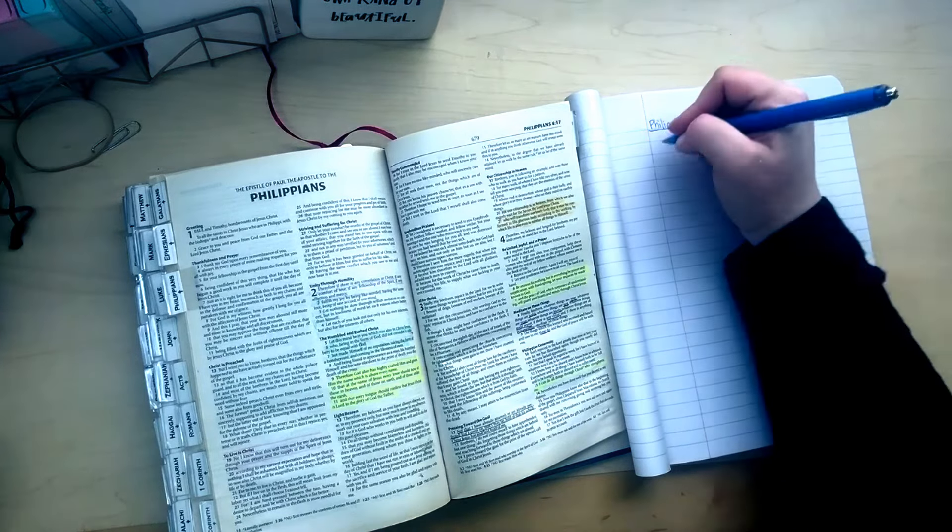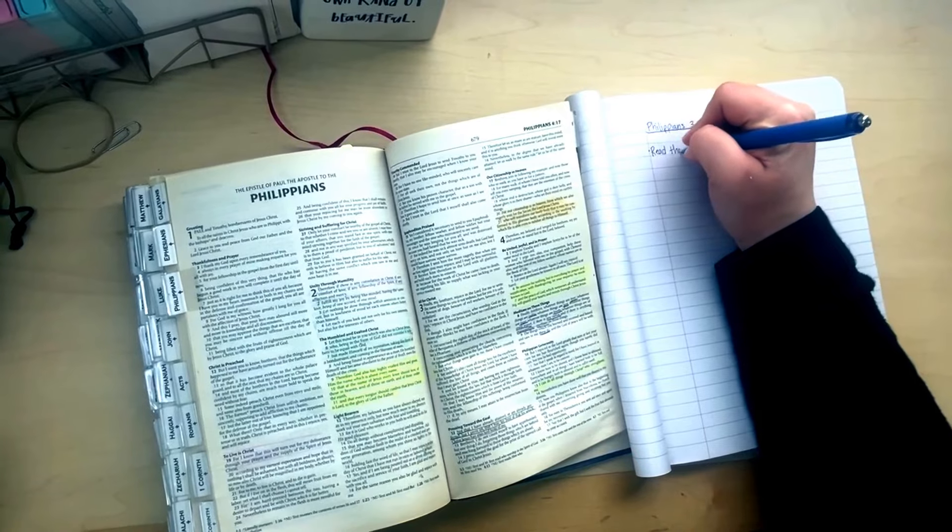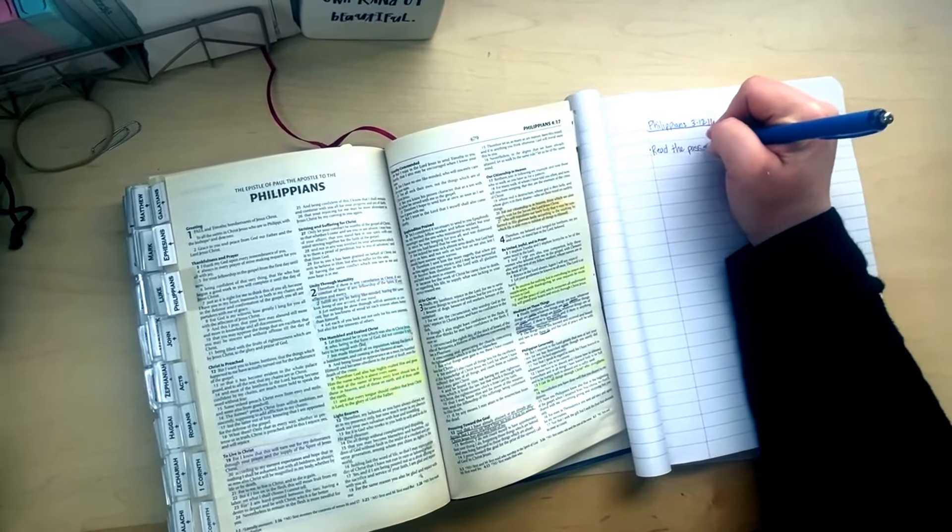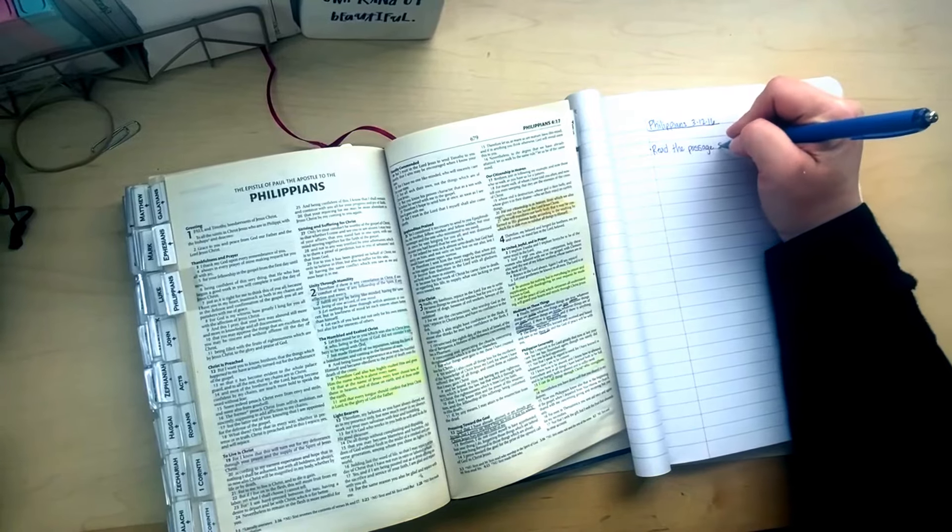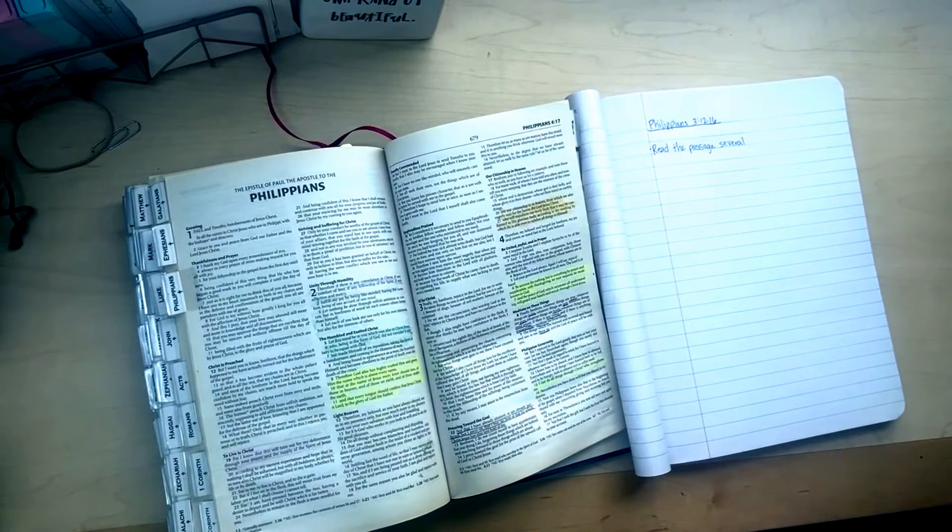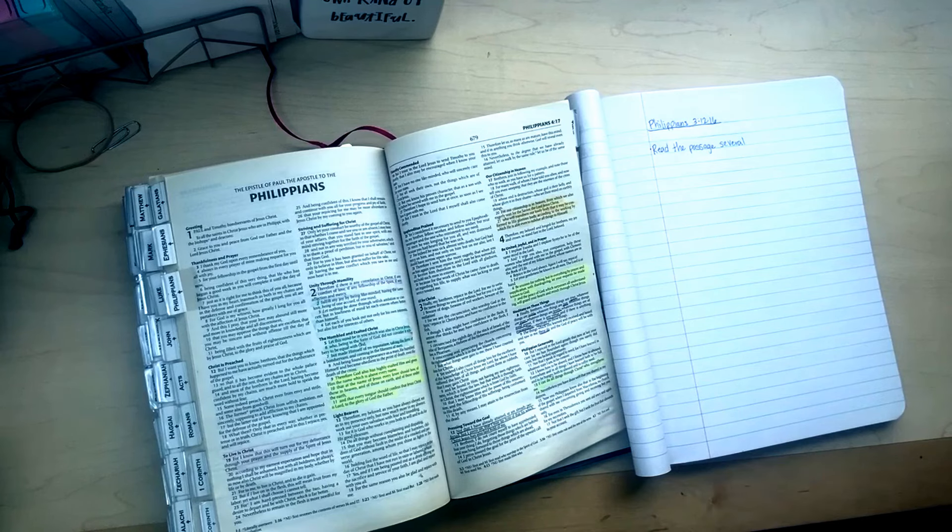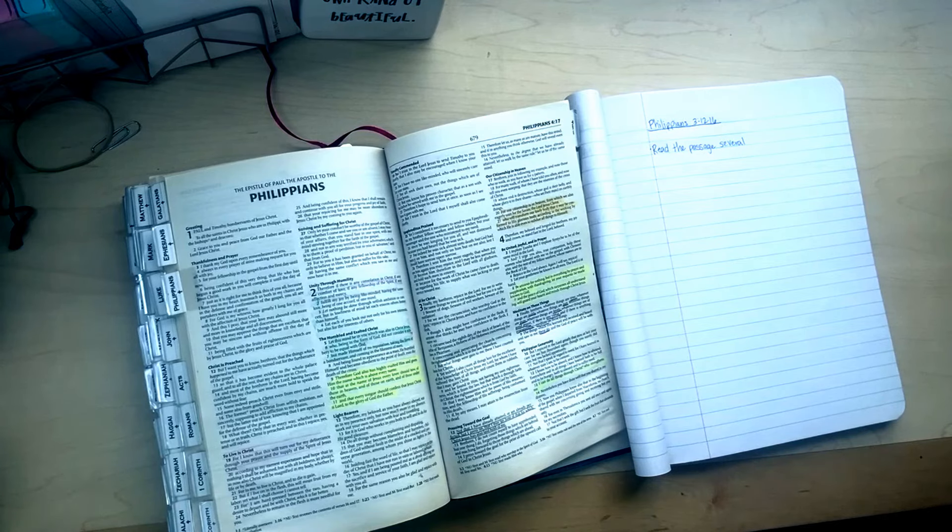So what we need to do is read the passage. And I'm just going to make a note of that in my notebook: read the passage several times. So after I read through this one time, I'm going to read through it a few more times. You might need to read through it three times, four times, five times, however many times you feel that you need to read it. That's how many times you should read it.